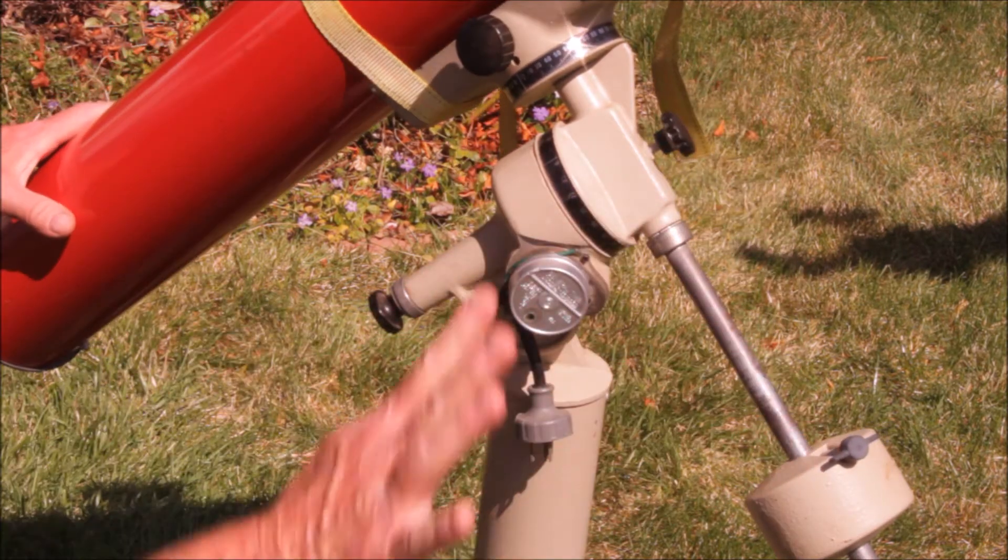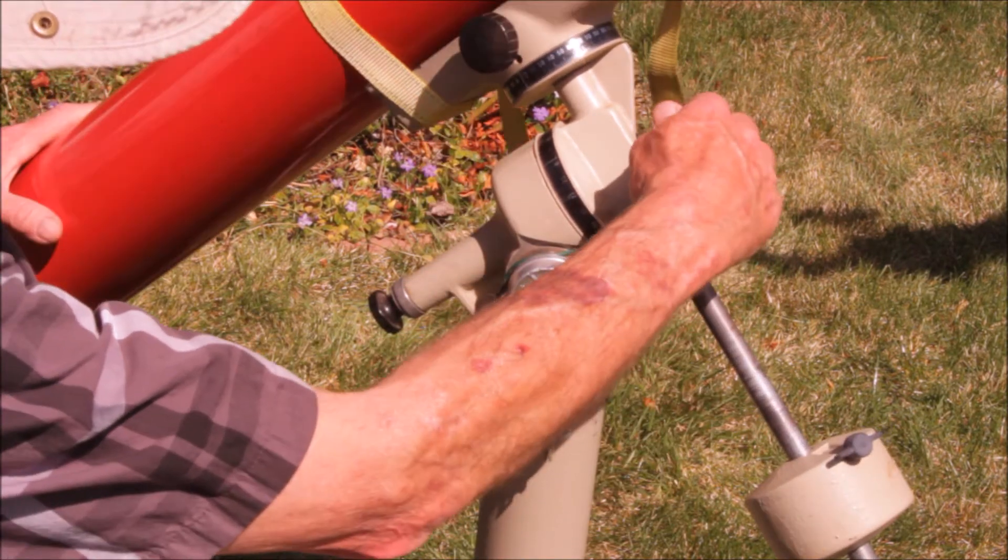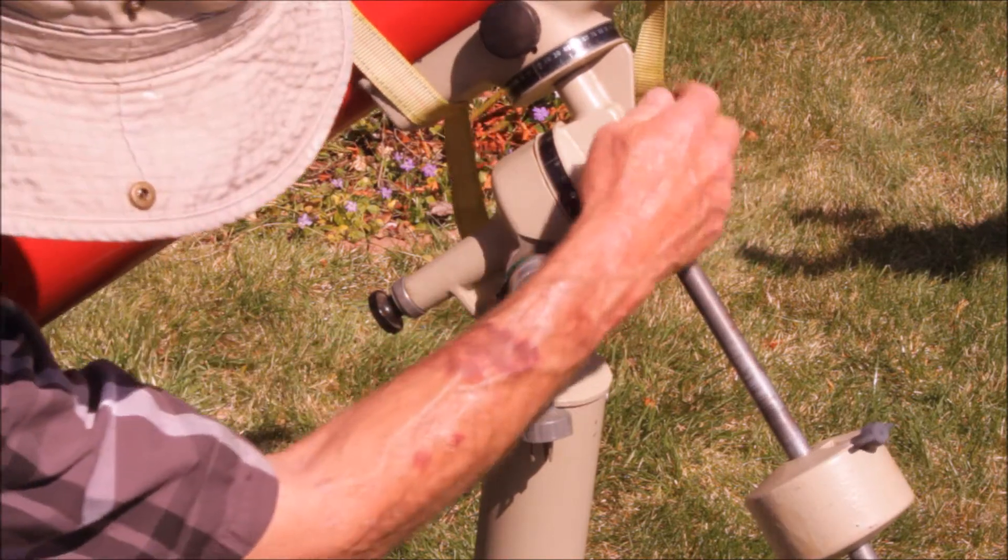This is a fairly utilitarian kind of a locking mechanism for the declination. It does have setting circles.